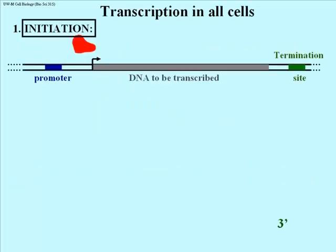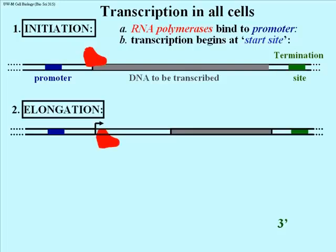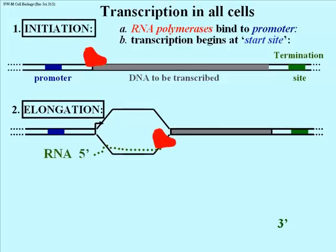This is transcription as it would occur in all cells. The first step is initiation. What we see here is a double-stranded DNA — two lines representing two strands of DNA to be transcribed. There is a promoter to the left in blue, an arrow representing the start site of transcription, and an RNA polymerase shown in red. The RNA polymerase binds to and recognizes the sequence of the promoter, positioning itself at the start site. Once that happens, it begins growing an RNA molecule by elongation, producing RNA beginning at the 5' end and growing towards the 3' end.